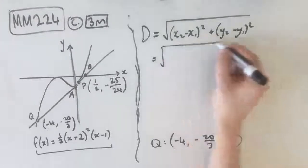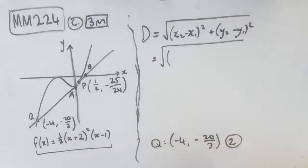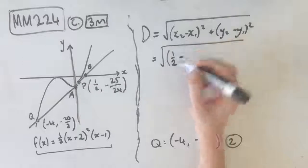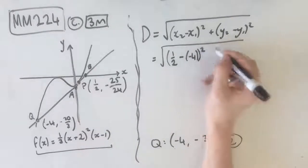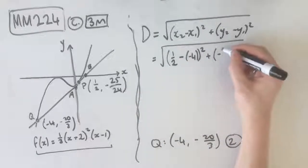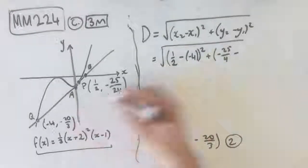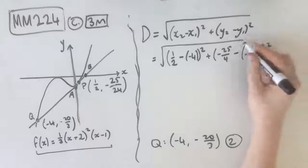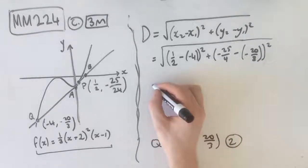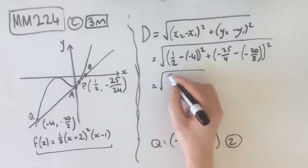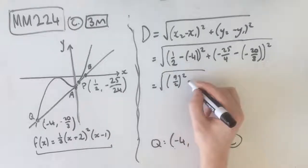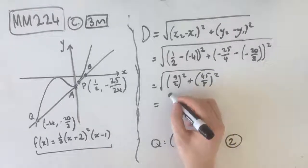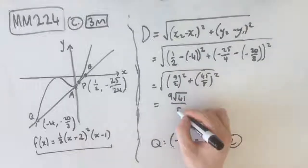Our x₂ value, doesn't matter which one's which, you can just do whichever. I'm going to say that 1/2 is our first x value, minus -4 squared, plus -25/4 minus -20/3. Square root of that. From here, we get the square root of (9/2)² plus (45/8)², which gives us 9√41 / 8 units.